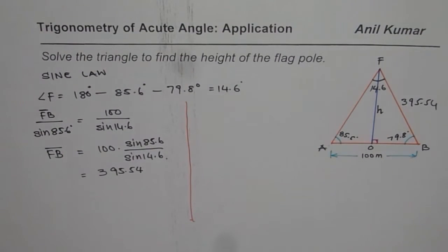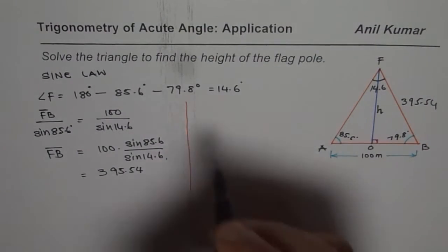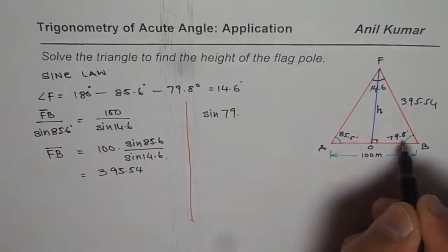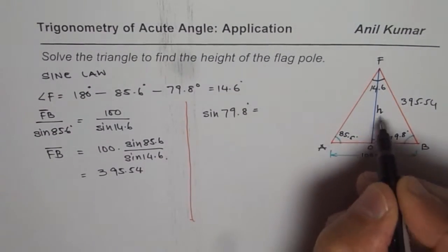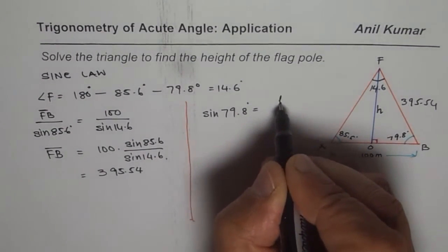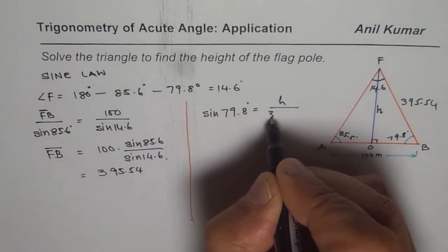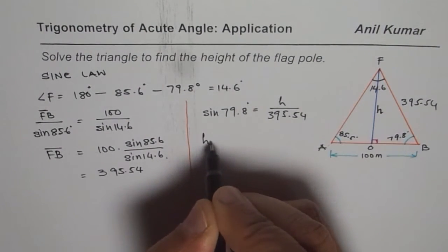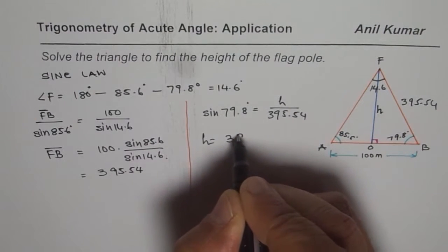So let me write it down as sine of 79.8 degrees should equal height over hypotenuse, so height over 395.54. So height is equal to 395.54 times sine of 79.8.